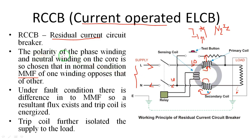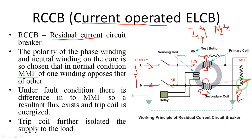The polarity of the phase winding and neutral winding on the core is chosen so that under normal conditions, the MMF — magnetomotive force — of one winding opposes that of the other. Since the same current flows through the same number of turns, the MMF values are equal but in opposite directions, so the differential flux becomes zero. However, if an earth leakage current occurs, the return current becomes reduced — for example, from 10 amperes down to 9 amperes. The number of turns remain equal but the currents differ, so the MMF values are also different.